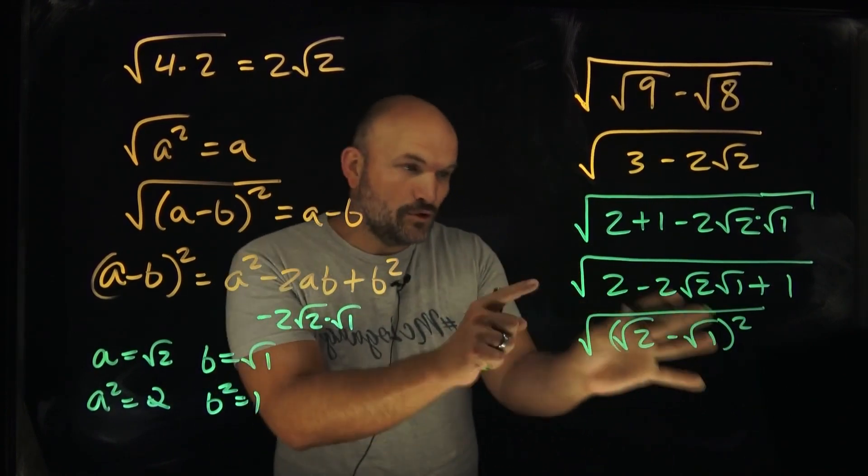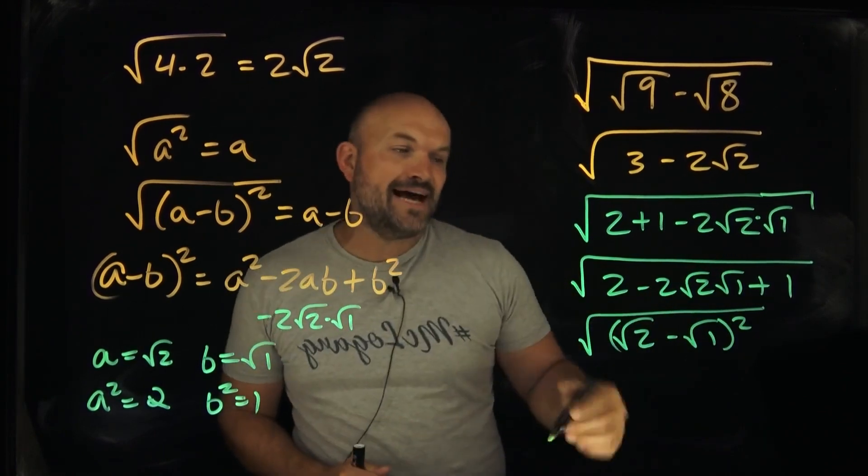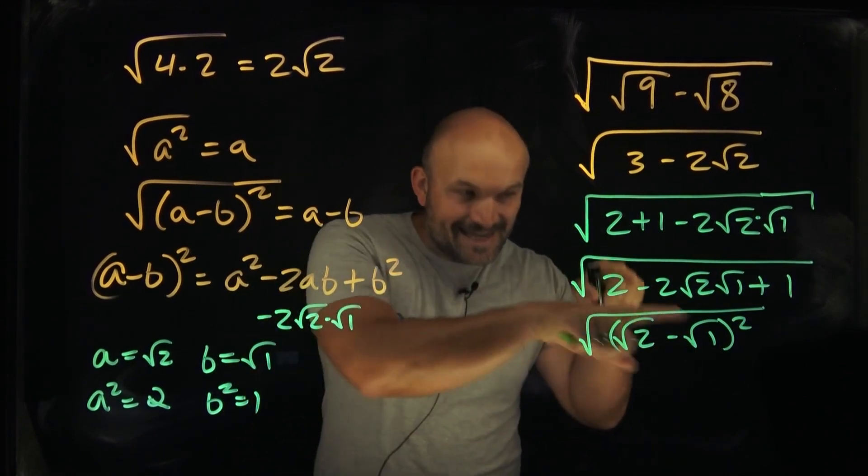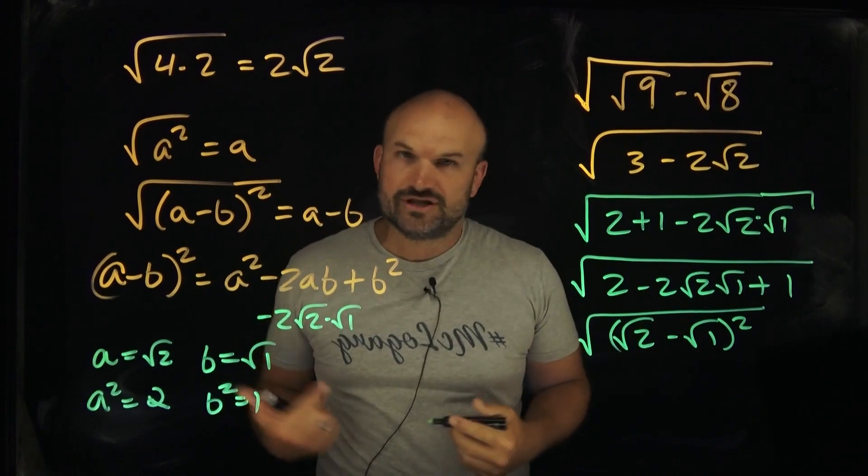quantity squared. And now, if I have the square root of something quantity squared, I can now simplify that to just my a minus b, and now I can take the square root of 1, which is just going to be a 1.